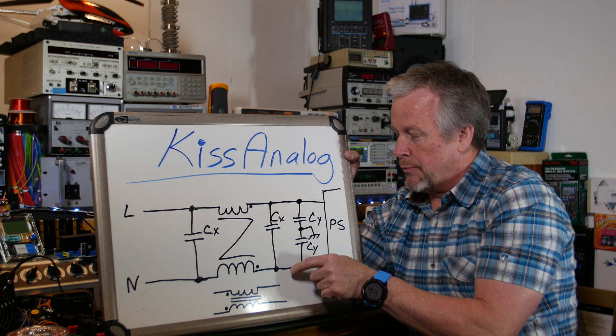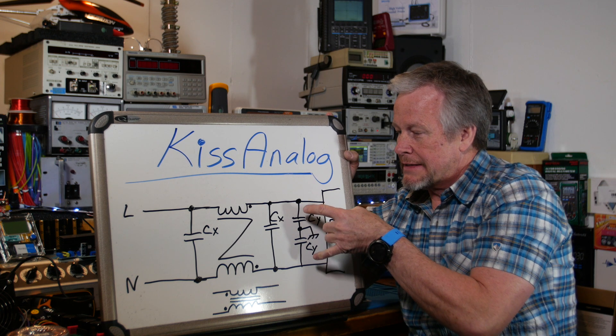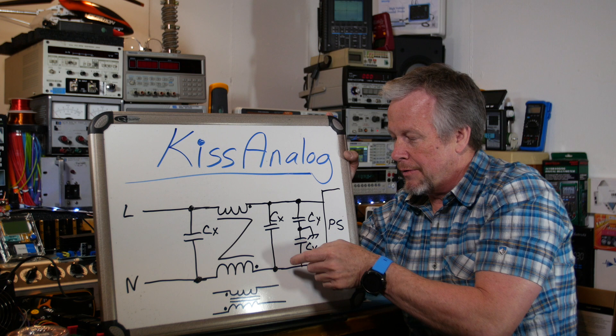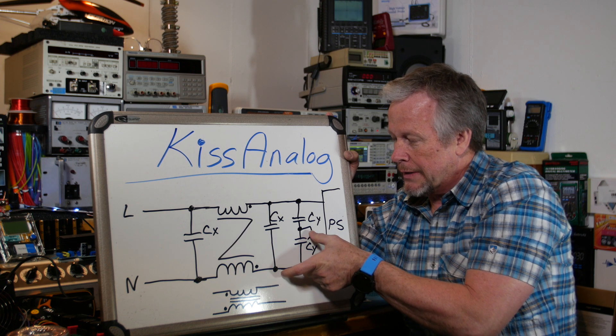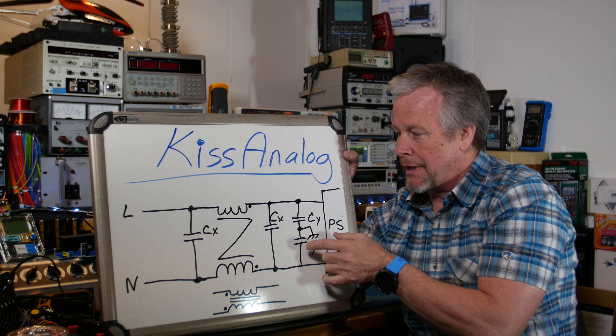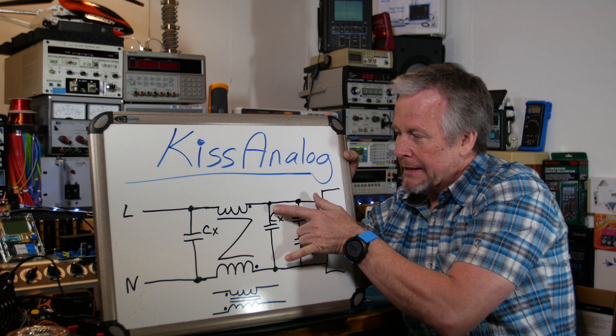Then you put one probe here, one probe here. You'll see some noise and it'll be kind of the same image on both things. So there is common noise found here and common to this. It's the same noise on both lines and it's trying to come out of your power supply.